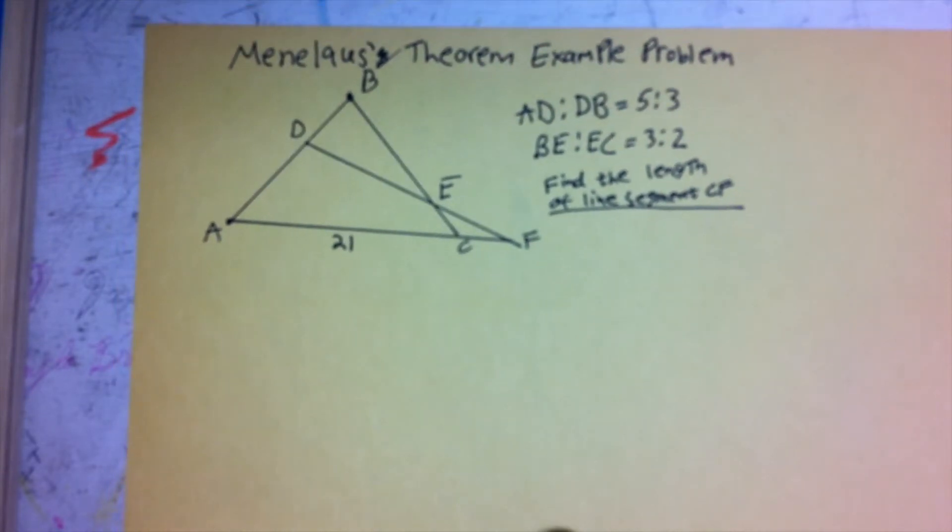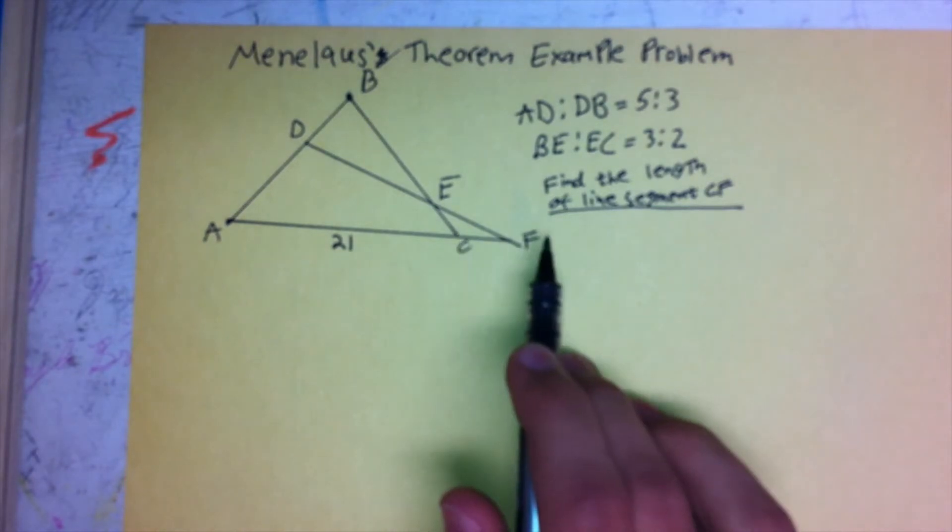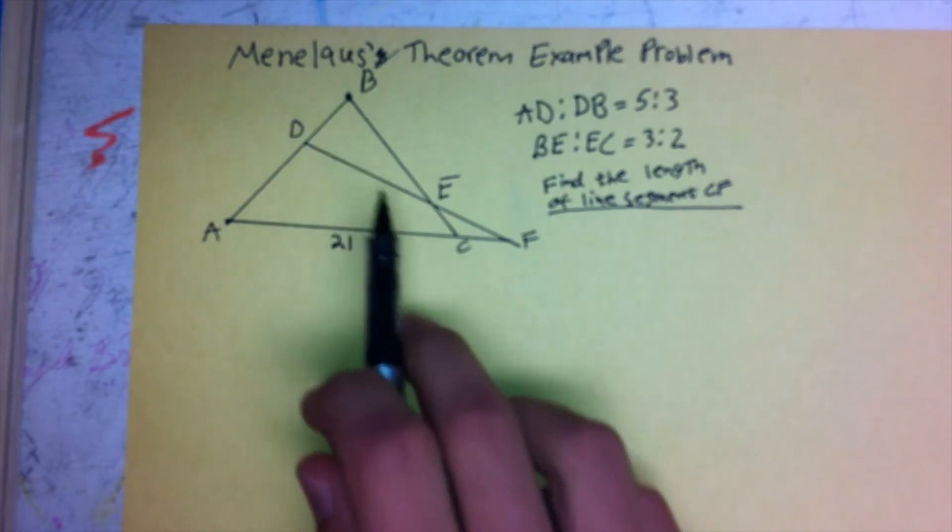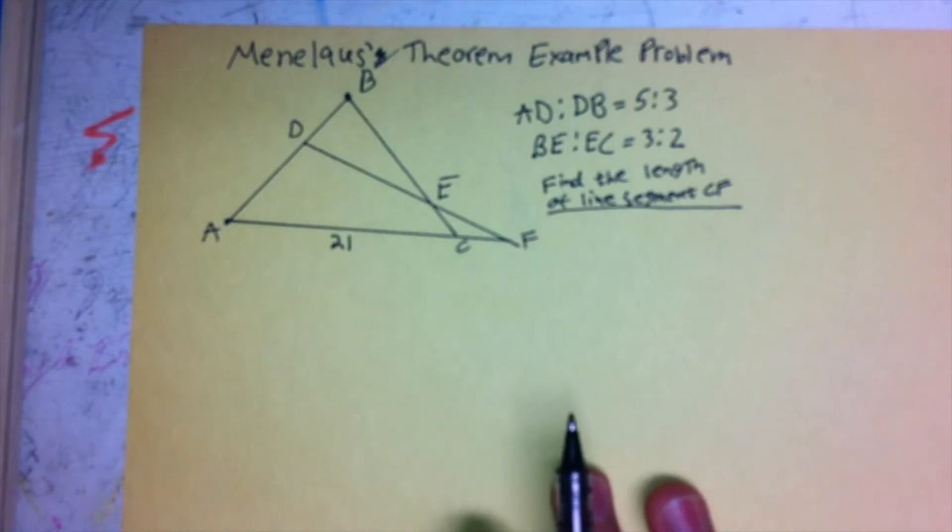So, in this problem, we're asked to find the length of line segment CF, and we're given the ratio of AD to DB and BE to EC, as well as line EC.